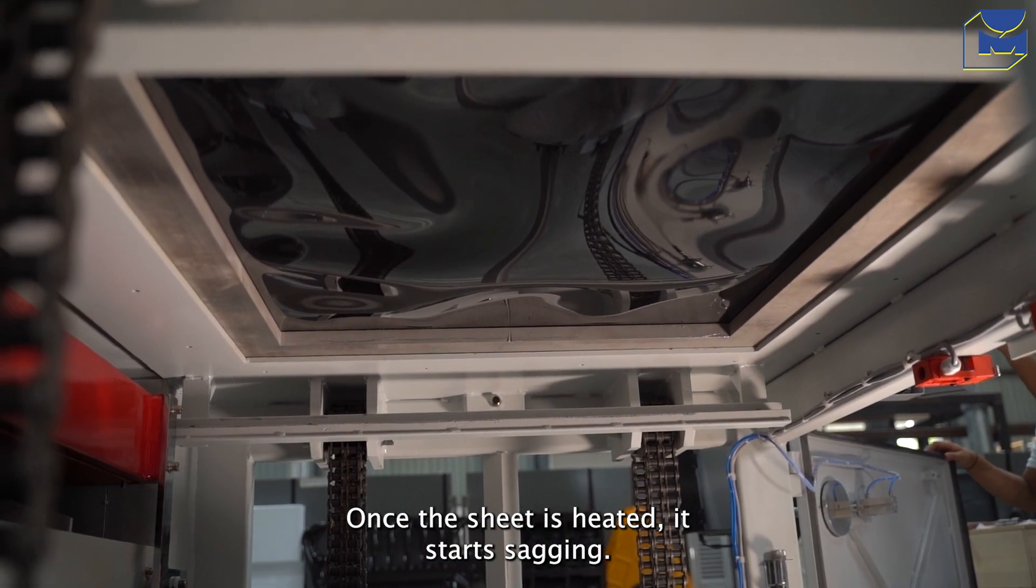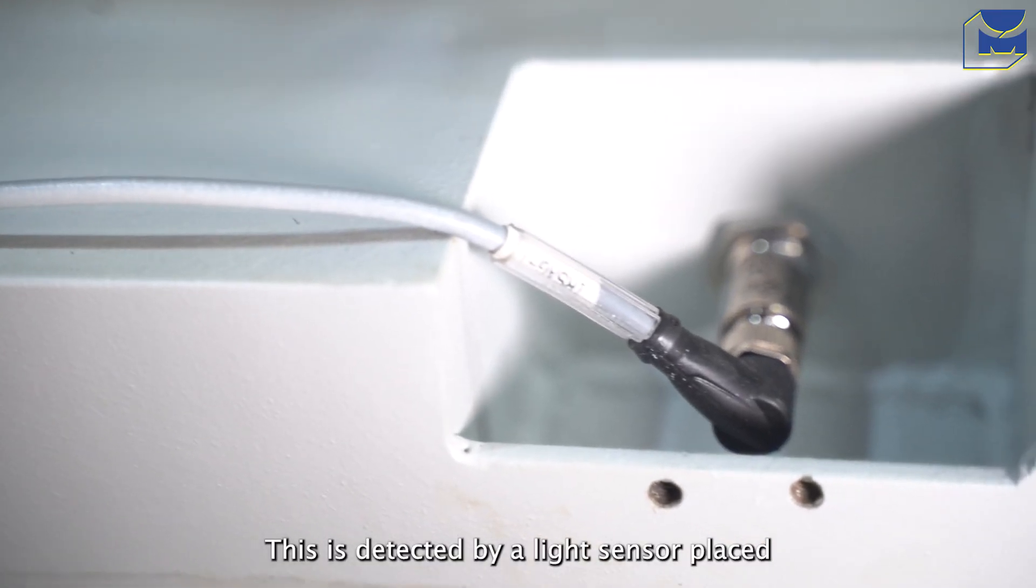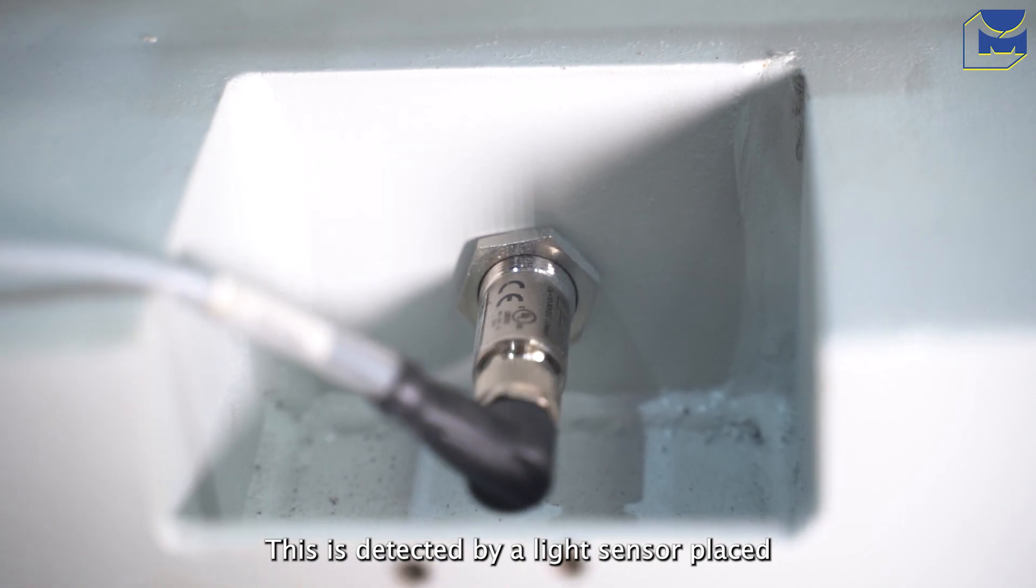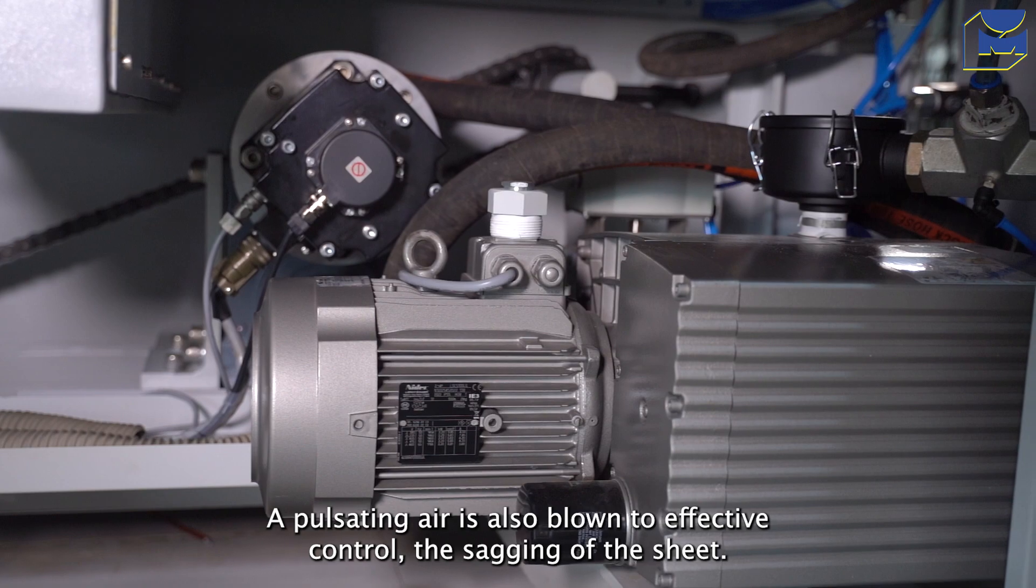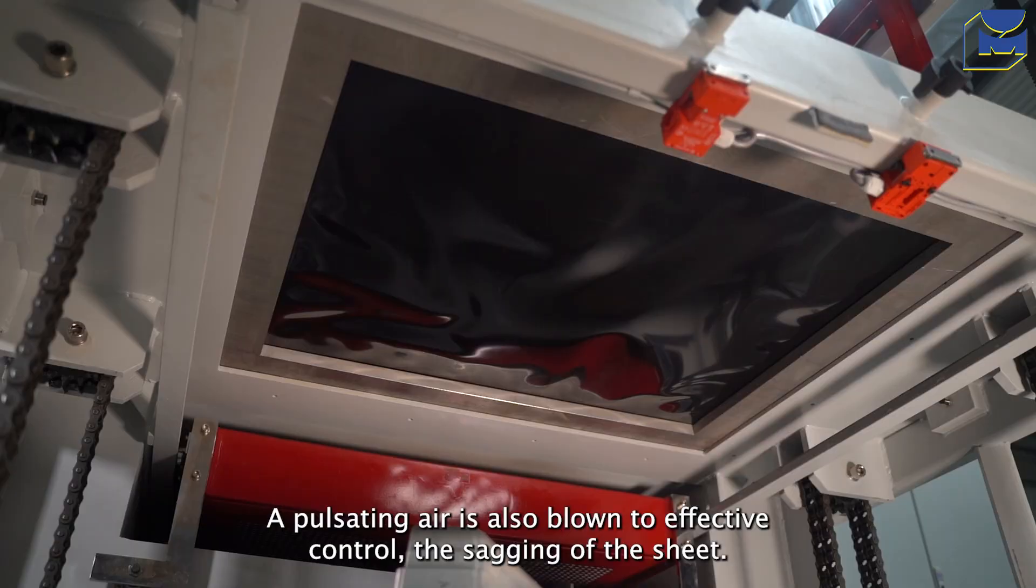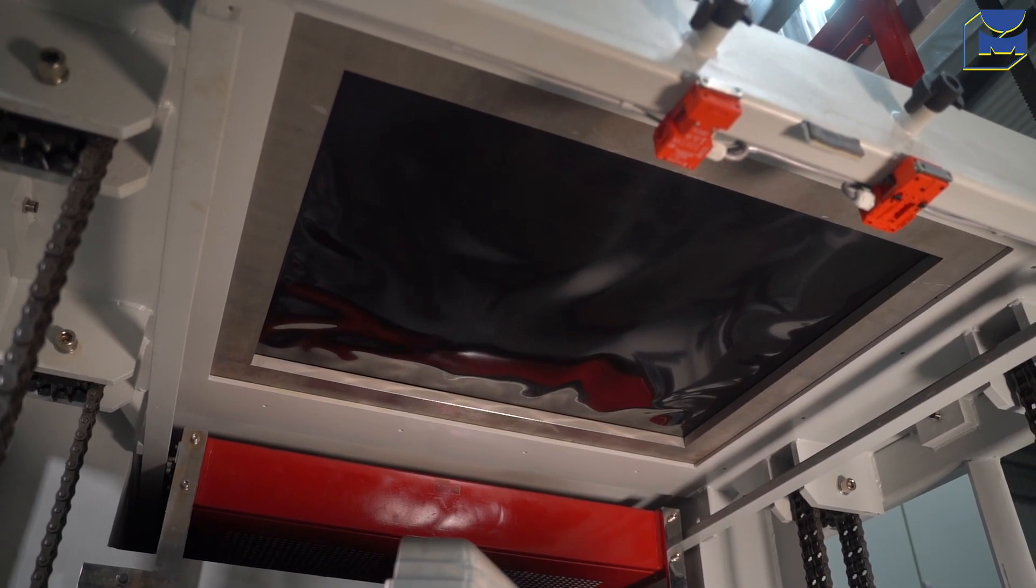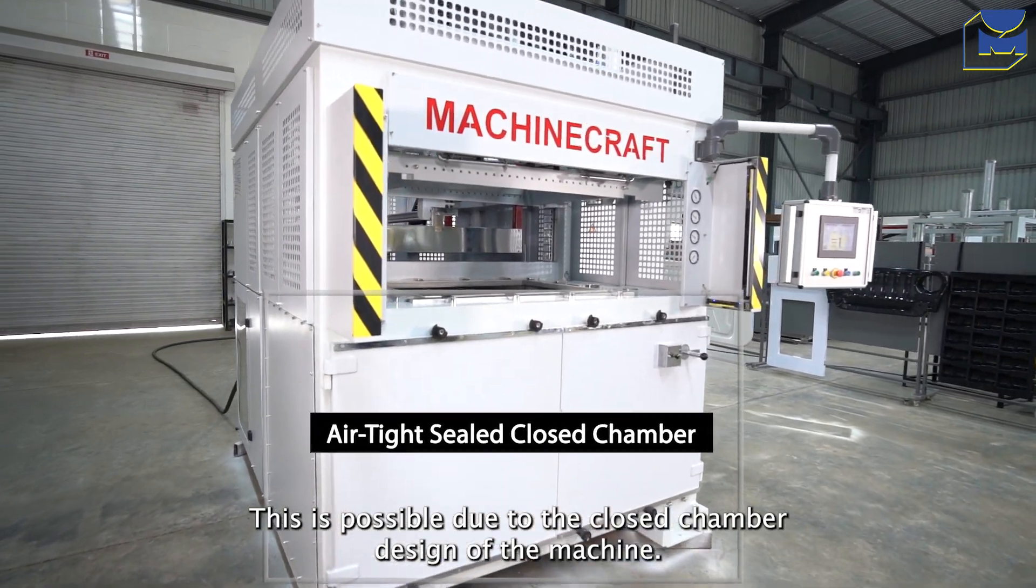Once the sheet is heated, it starts sagging. This is detected by a light sensor placed at the bottom of the sheet, right above the bottom heater. A pulsating air is also blown to effectively control the sagging of the sheet. This is possible due to the closed chamber design of the machine.